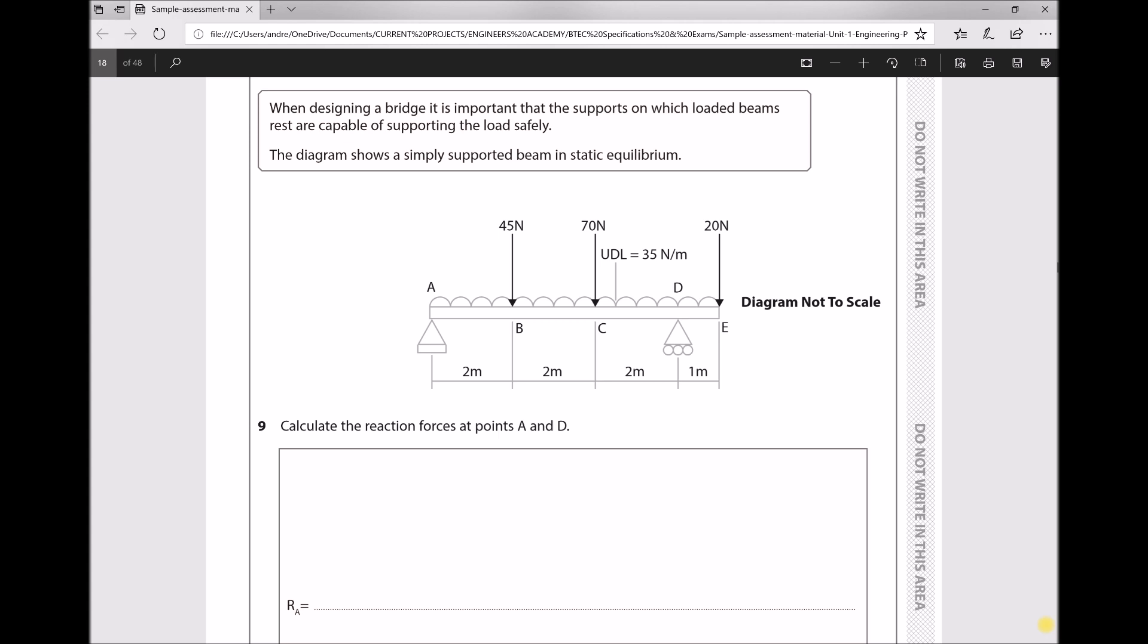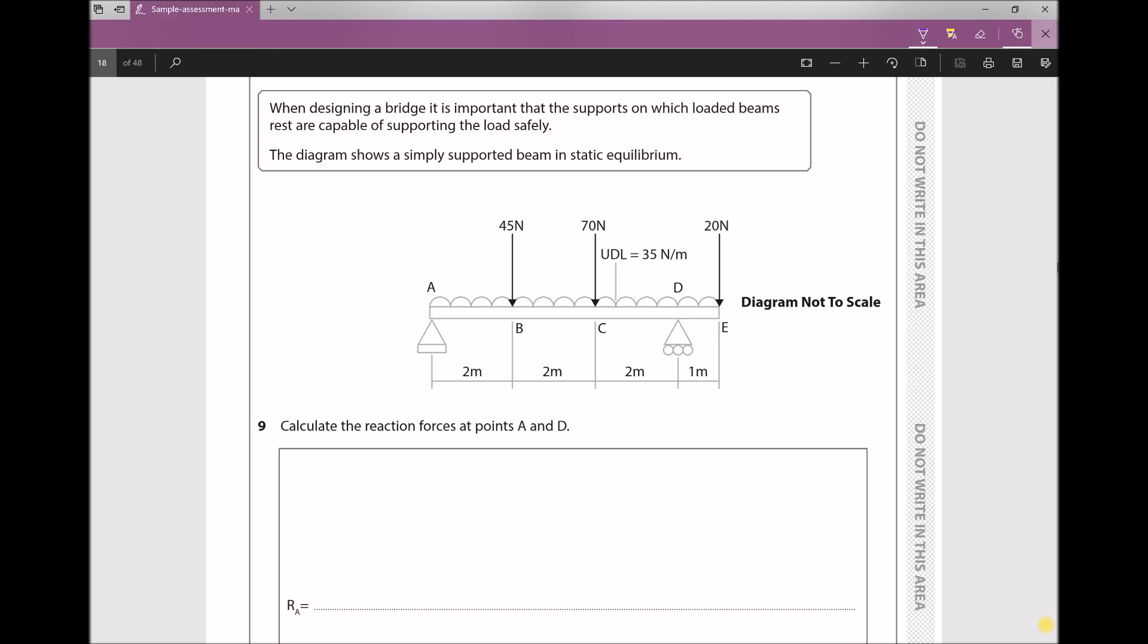Now one thing that's important to point out is that we have two conditions for static equilibrium. The first states that the sum of the moments in the clockwise direction equals the sum of the moments in the anticlockwise direction, and the second condition states that the sum of the forces pushing down equals the sum of the forces pushing up.